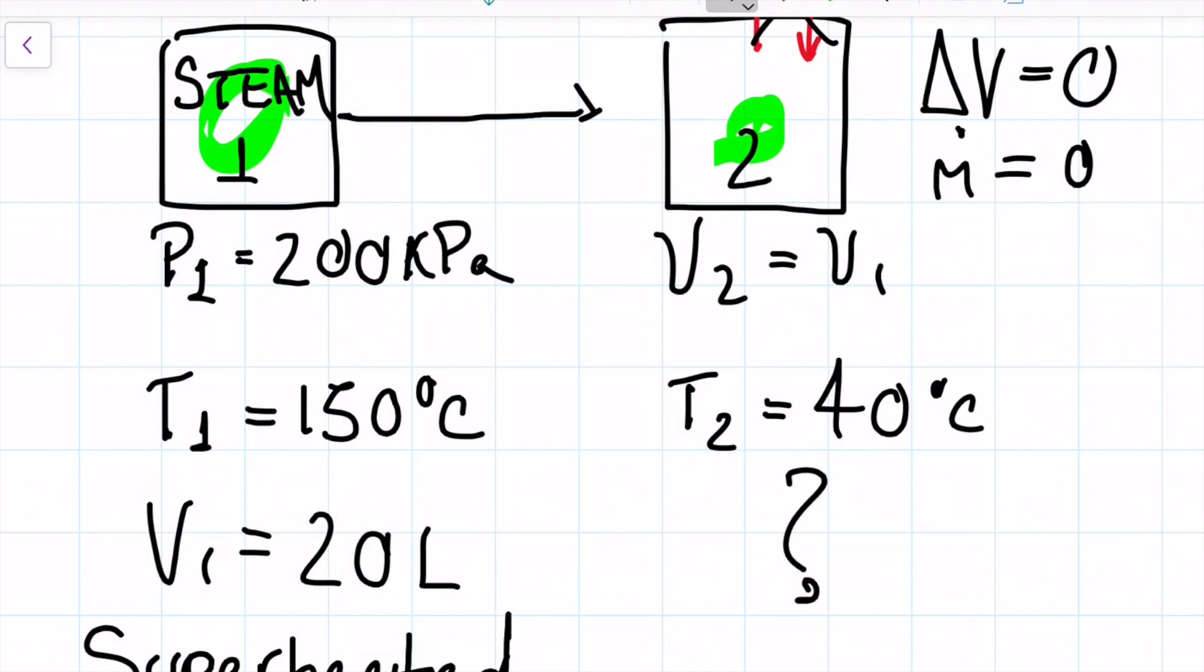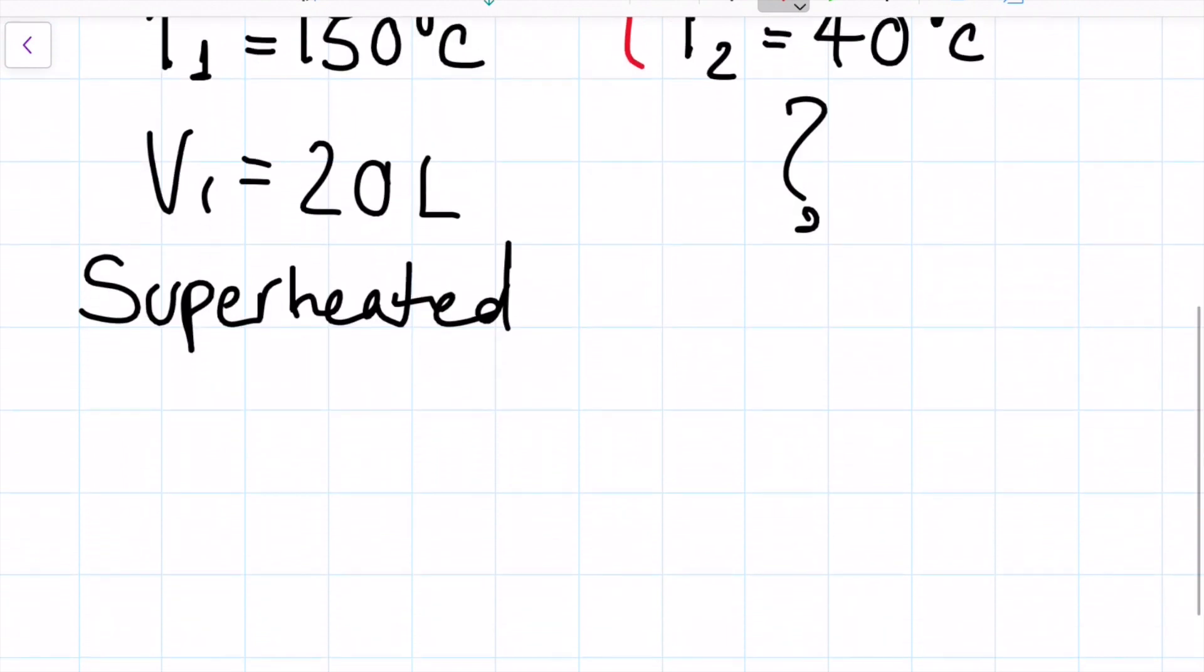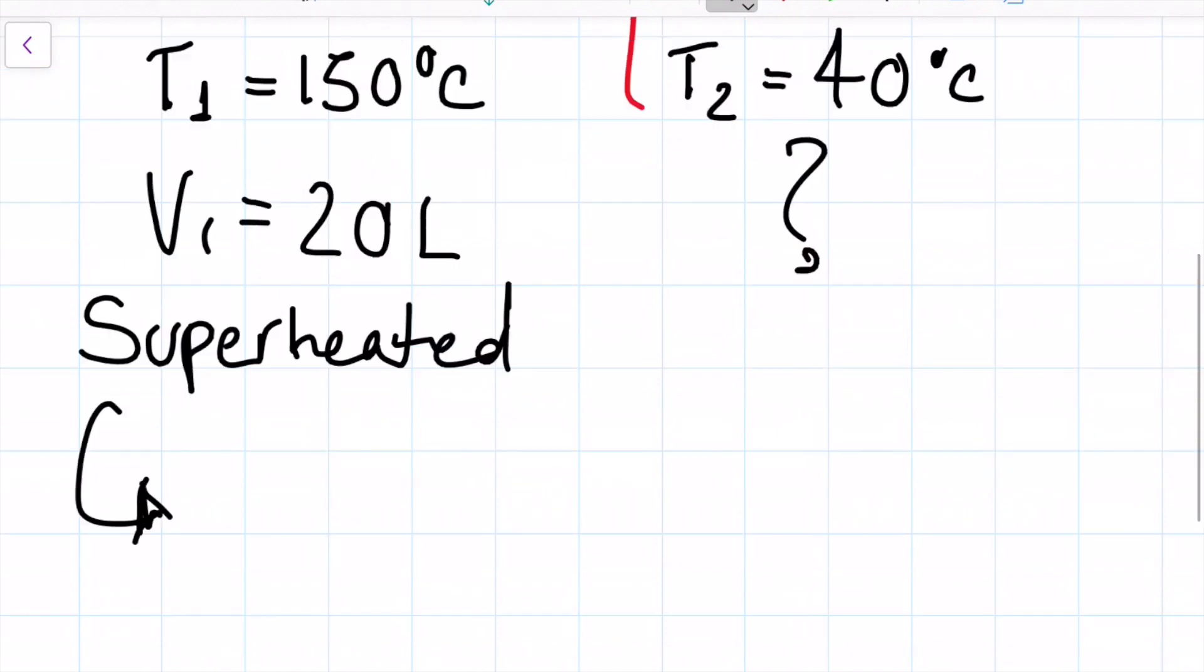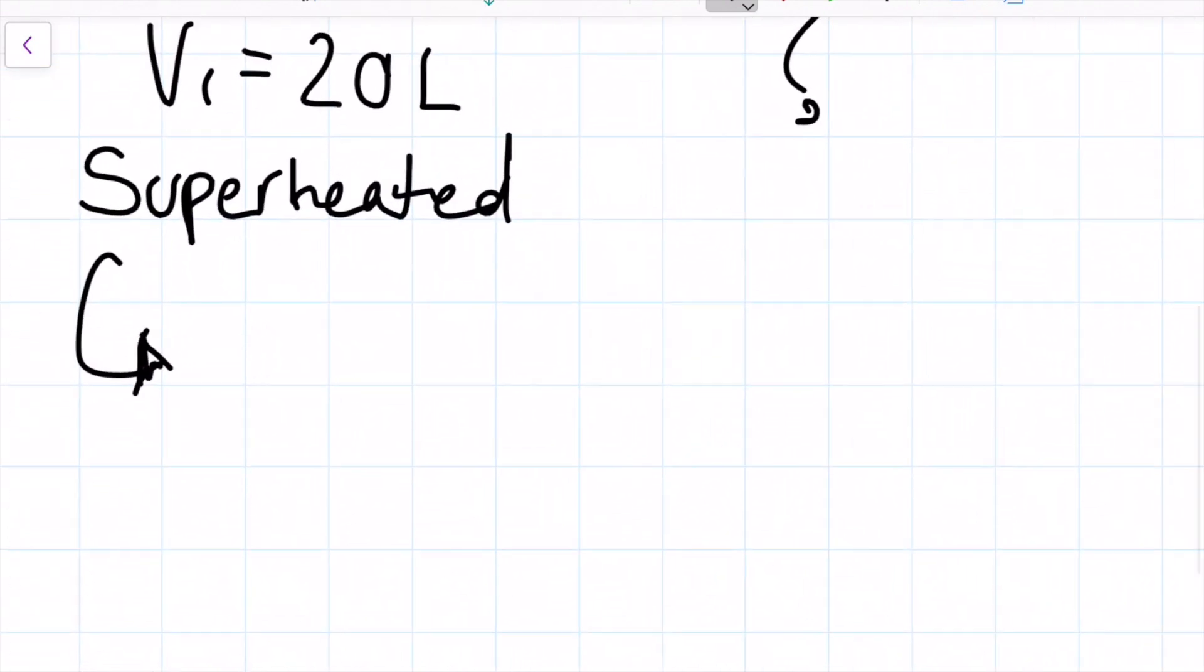And this one here I'm not sure, but since we have two properties, right, as soon as we have two properties you can use these two to be able to figure out what's happening in the second one. So in the first state I'm going to go ahead, knowing superheated and knowing it's 150 Celsius and 200 kilopascals, I'm going to go ahead to table A6, which is the superheated one, and that's going to be on page 910.